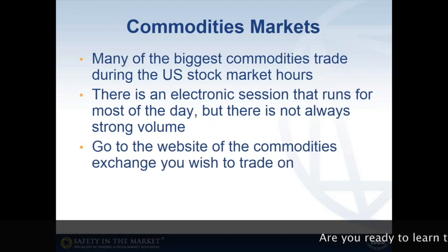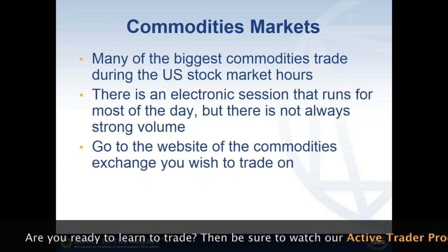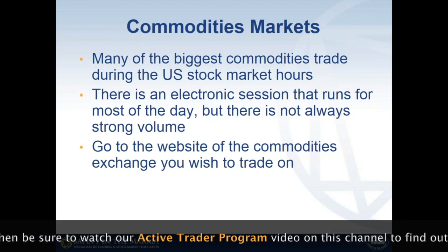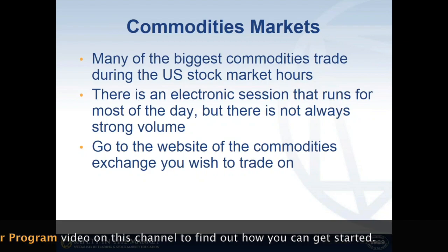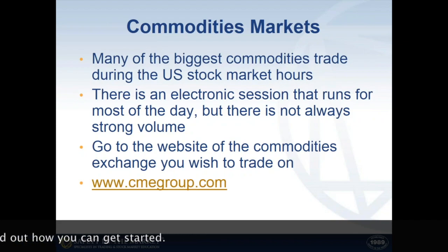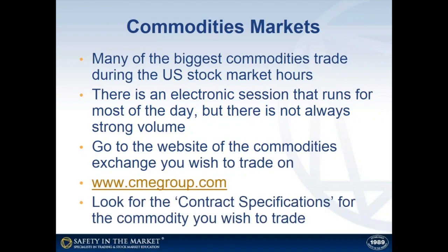To find out what time your particular commodity trades — whether it's crude oil, gold, silver, coffee, cotton, sugar, wheat, corn, or any number of commodities — you need to find the exchange that commodity trades on and go to their website. For example, www.cmegroup.com is the Chicago Mercantile Exchange, and on the website you look for something called the contract specifications for the commodity you wish to trade.